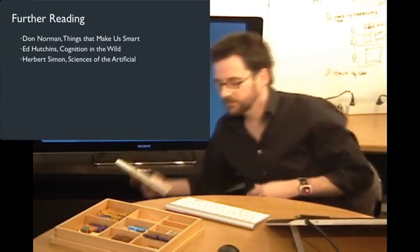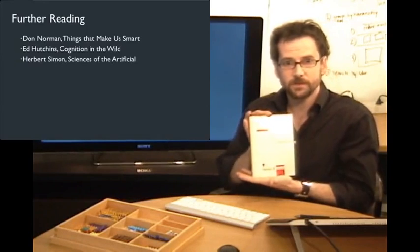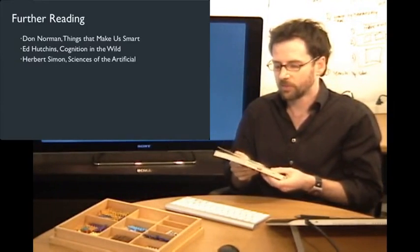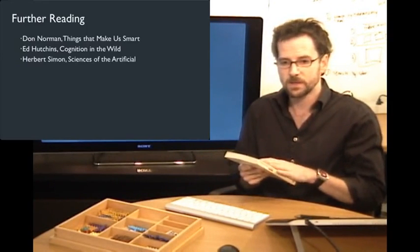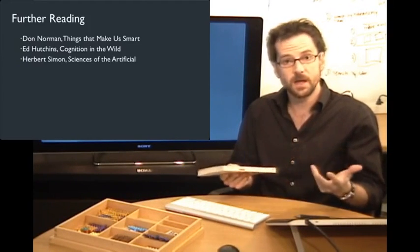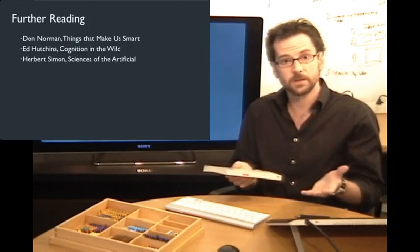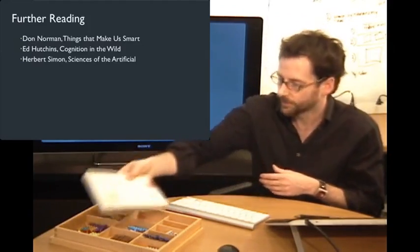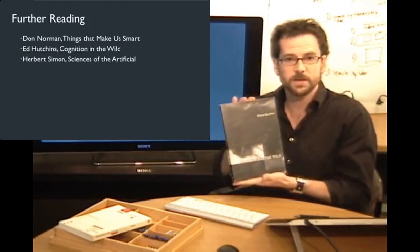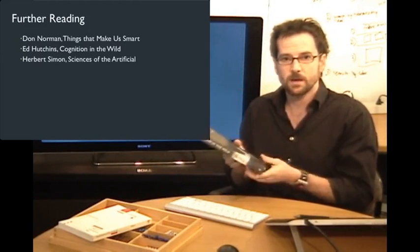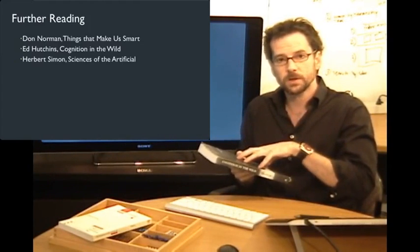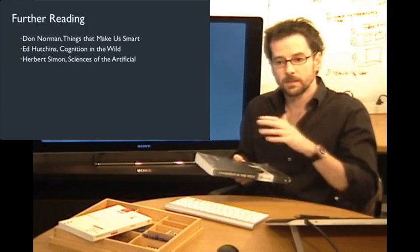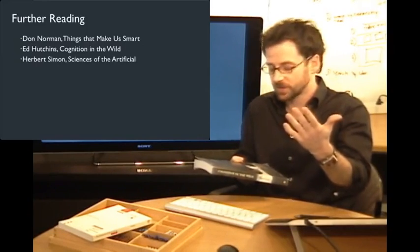One is Herb Simon's The Sciences of the Artificial — a great monograph written several decades ago about the role of design in science and the nature of mental representation. Another is Ed Hutchins' book Cognition in the Wild, which lays out a foundation for distributed cognition and describes Ed's work in airplanes and on naval ships.